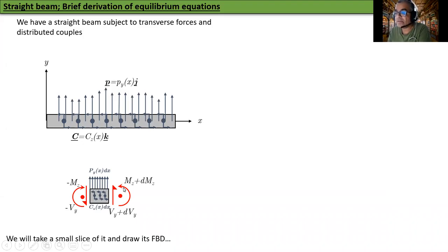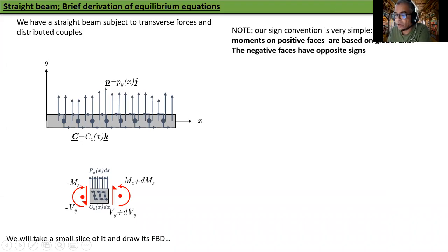Our sign convention is very simple. All forces and moments on the positive face are based on the global axis. The negative forces and moments have opposite signs. Our external forces and couples always have global axis. So everything on the external force and moment side as well as on the positive face side will be based on the global axis, and the other ones will be opposite to that on the negative face.